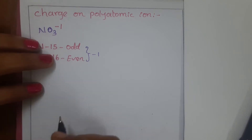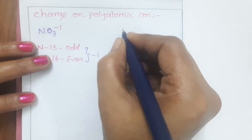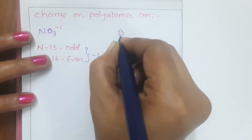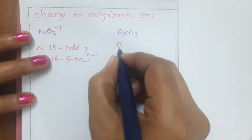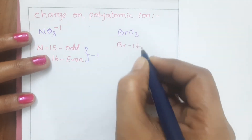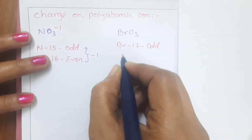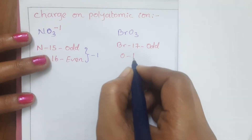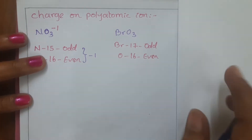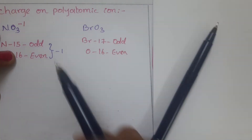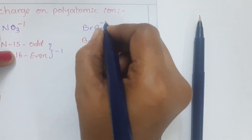When one odd and one even number comes, we write minus 1 as its charge. So NO3 carries minus 1 charge — nitrate ion is NO3 minus. One more example: BrO3. Bromine is a halogen, belongs to the 17th group — odd number. Oxygen belongs to the 16th group — even number. One odd and one even means we write minus 1.